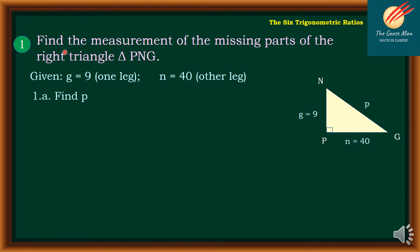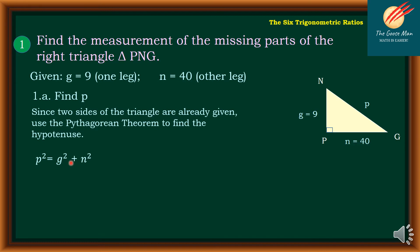So we would like to find the side p or the hypotenuse. Since two sides of the triangle are already given, use the Pythagorean theorem to find the hypotenuse, such that we have p² = g² + n². But if I'll extract the square root of both sides, so that is √(p²) = √(g² + n²).